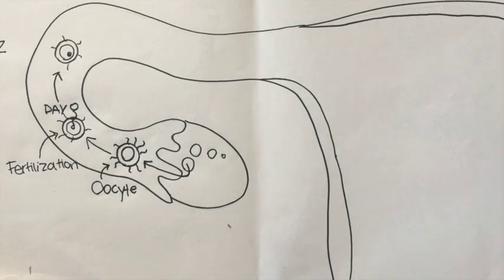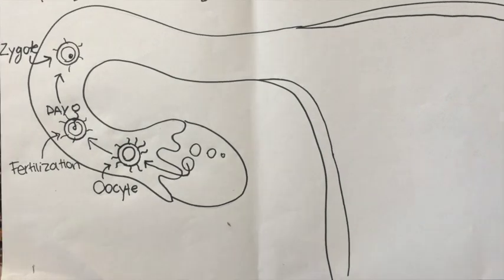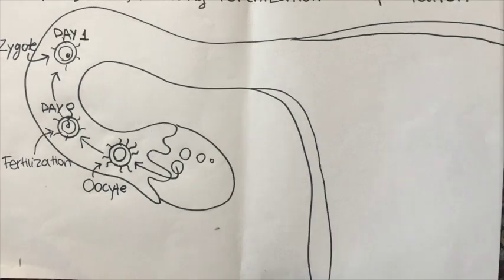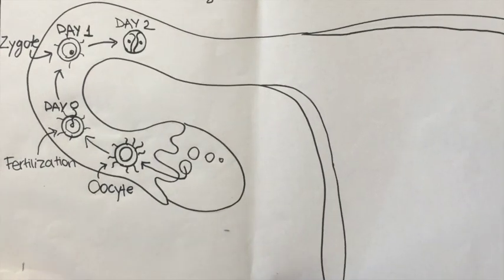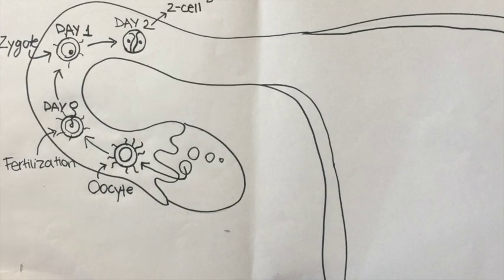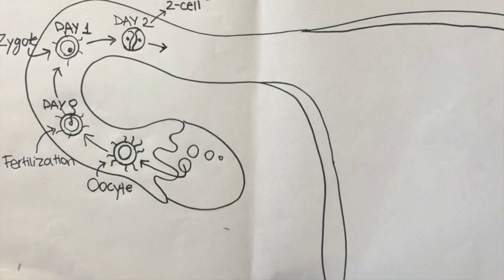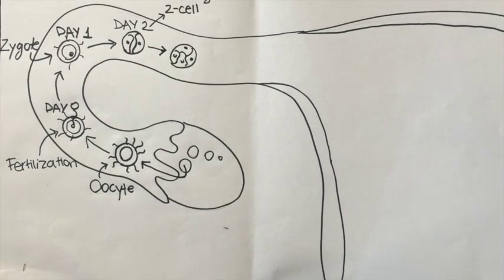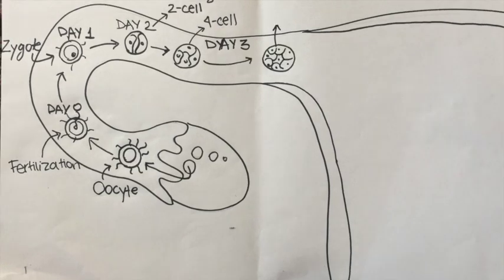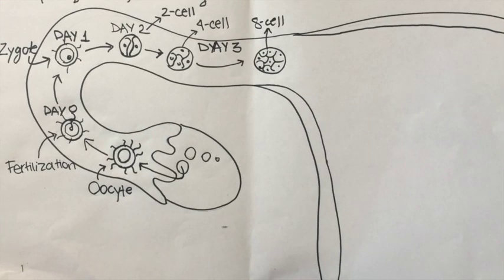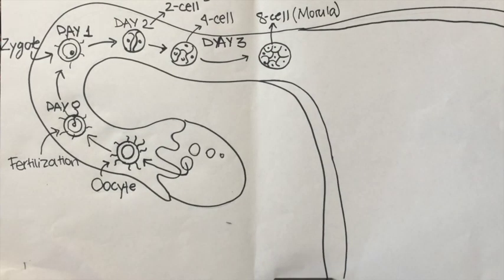On day one, one day after fertilization, this egg becomes a zygote. On day two, division starts happening and the egg becomes a two-cell egg. On day three it is a four-cell, and on day four it is now an eight-cell, which we call a morula.